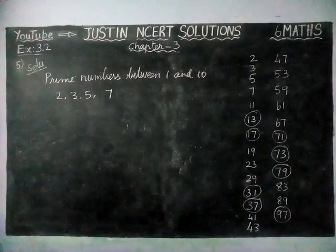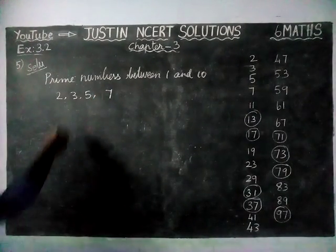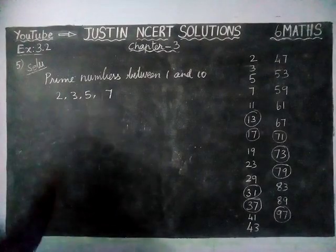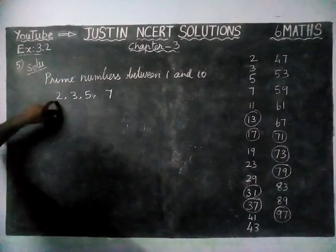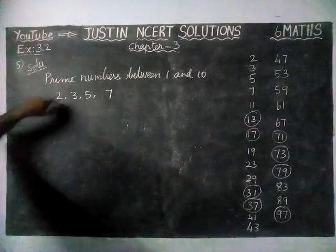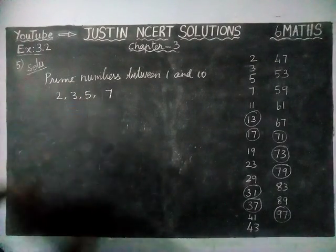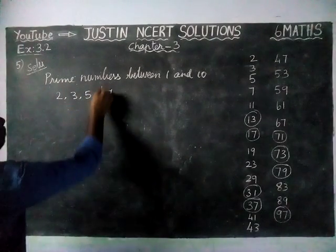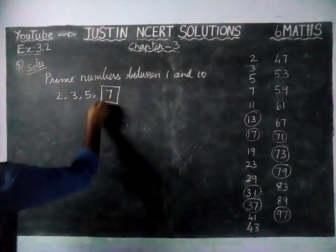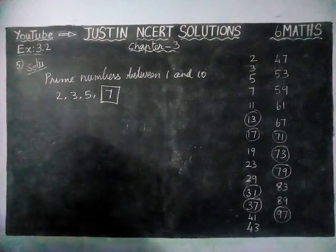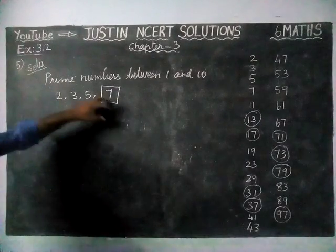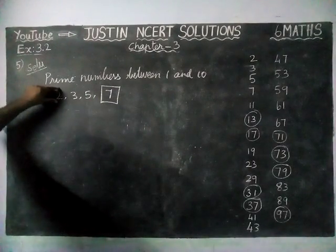These are all the prime numbers between 1 and 10. In this, the greatest number is 7. The greatest prime number is 7 and the smallest prime number is 2.